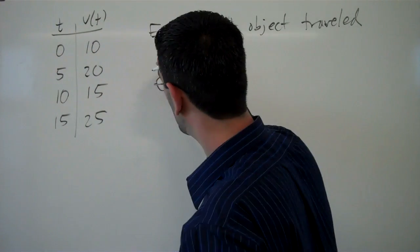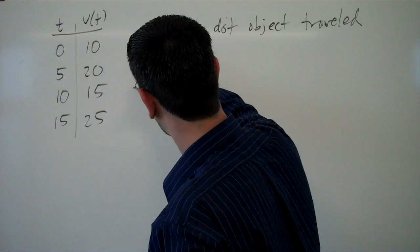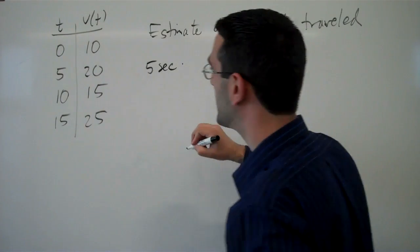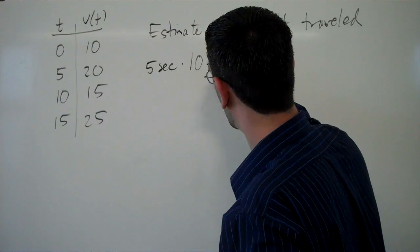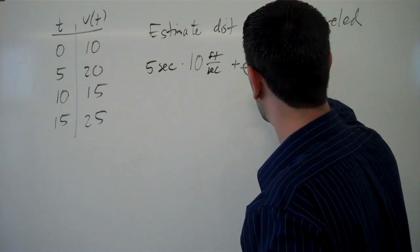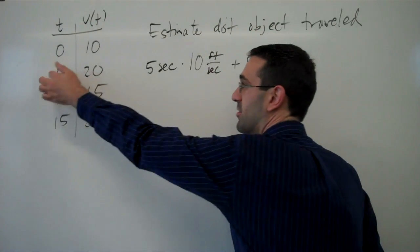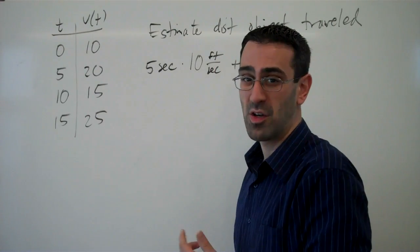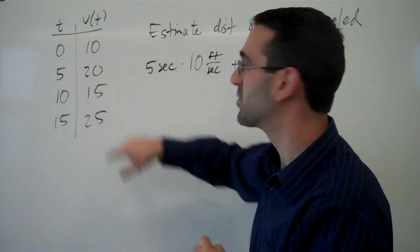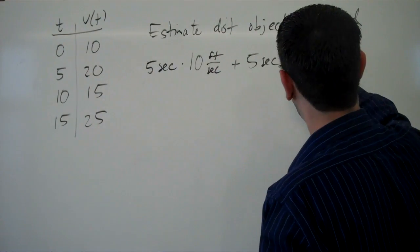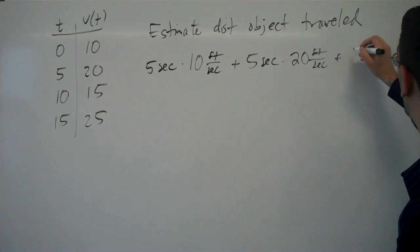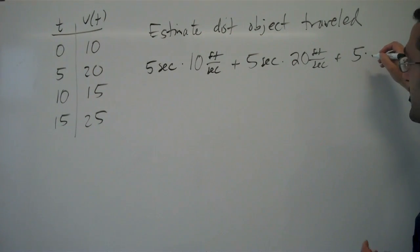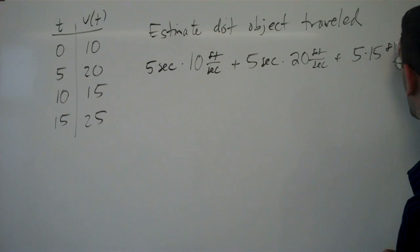So we could say that during the first 5 seconds, the speed was maybe 10 feet per second, and then during the next 5 seconds, so from 5 to 10, you know, again, maybe we'll use the starting value. So we could assume that the speed was 20 feet per second, and during those last 5 seconds, a speed of 15 feet per second.